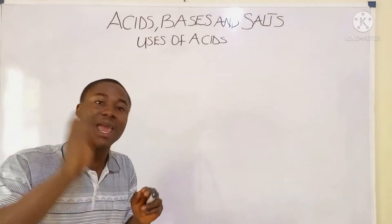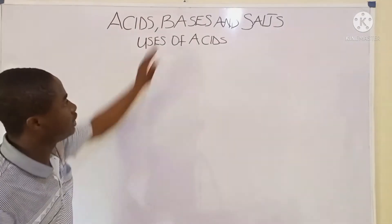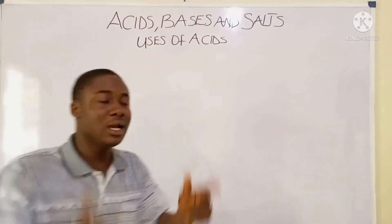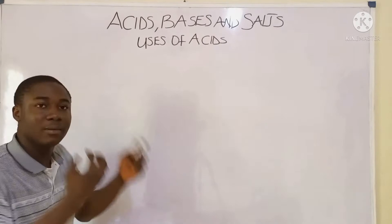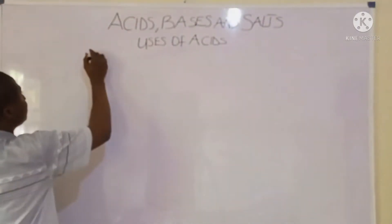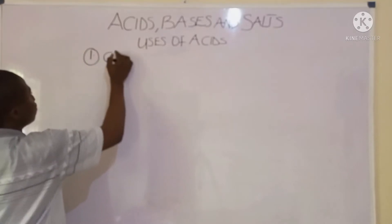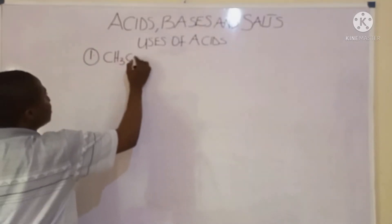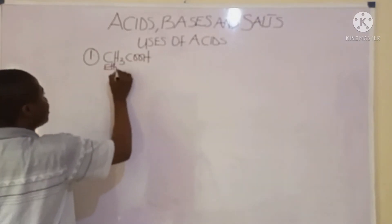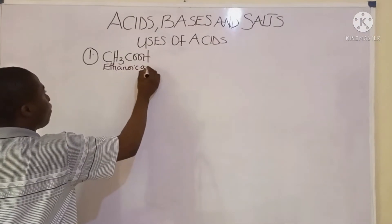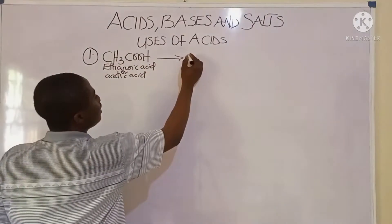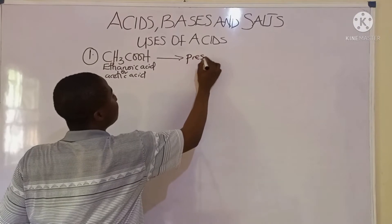Now let's move over to the uses of acids. We have various acids, and in this lesson I'll be giving some common acids and their uses. The first acid is called ethanoic acid — CH₃COOH — also called acetic acid. This acid is used as a preservative.